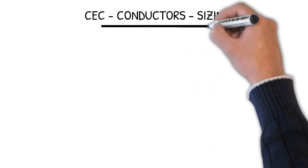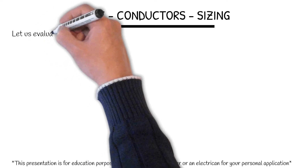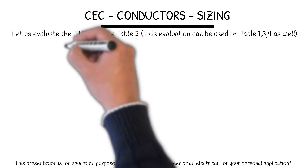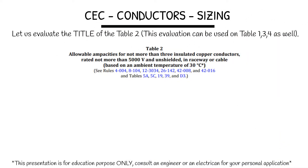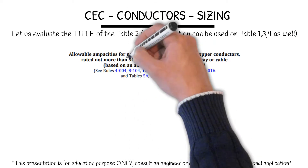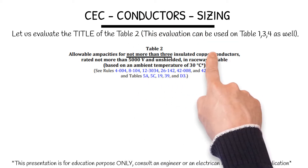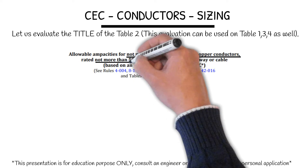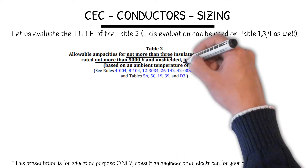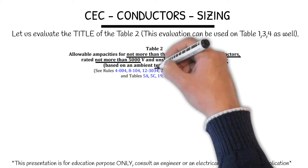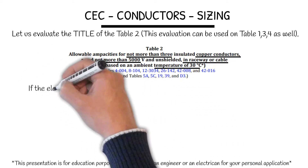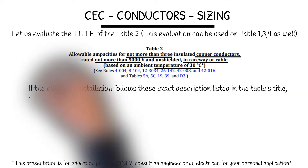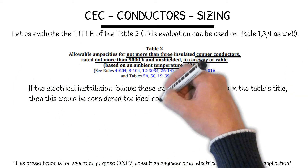CEC Conductor Sizing. Let us evaluate the title of Table 2. This evaluation can be used on Table 1, 3, and 4 as well. Allowable capacity for not more than 3 insulated conductors, copper, rated not more than 5000 volts, unshielded, and in raceway or cable based on the ambient of 30 degrees Celsius. If the electrical installation follows this exact description listed in the table's title, then this would be considered the ideal condition.